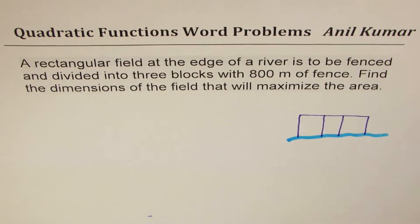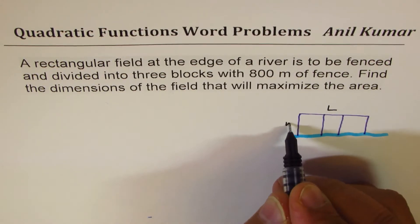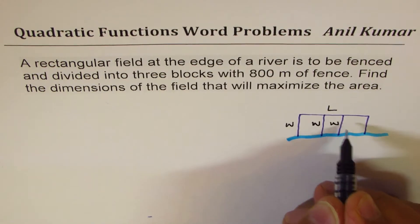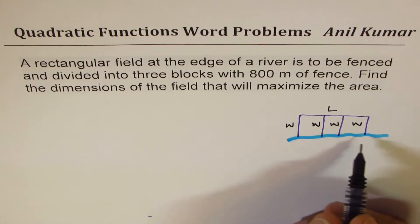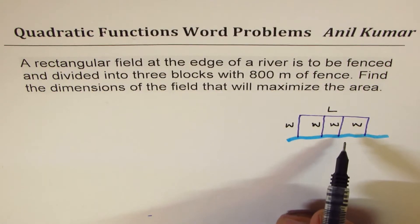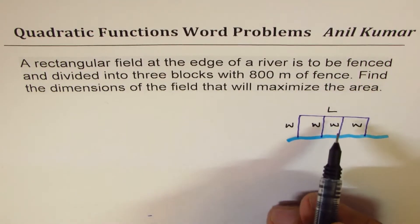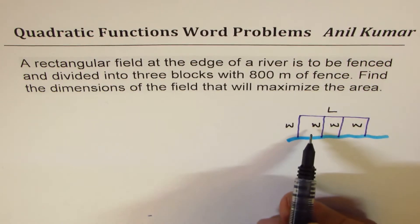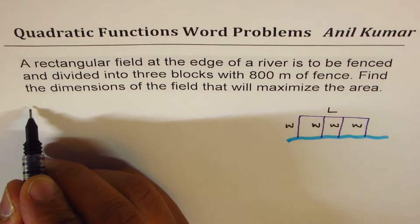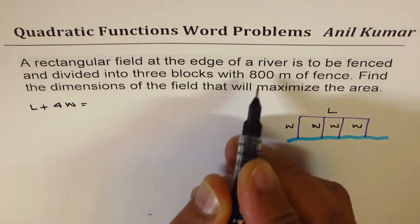Now let us assume that this is the length and these are widths of each block. Perimeter is sum of all the sides and that is equal to 800 meters of fence. So that gives us a relation between L and W, the two variables which we are defining. So we can write that L plus 4W is equal to 800.